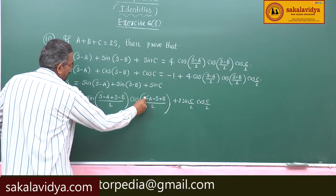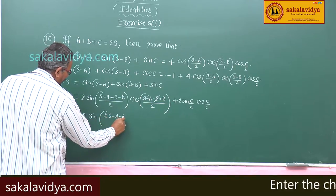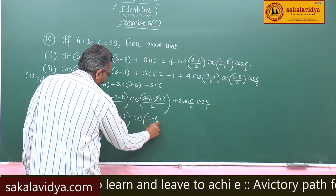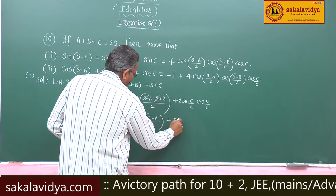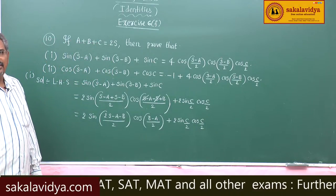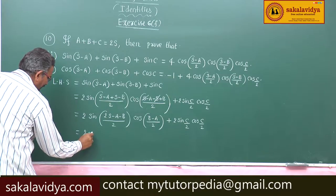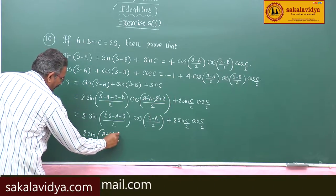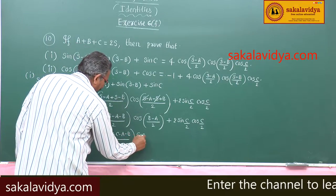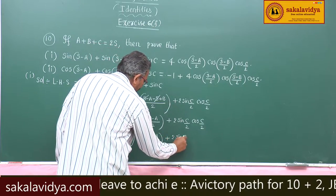Now, s gets cancelled. This can be written as 2 sin((2s minus a minus b)/2) cos((b minus a)/2) plus 2 sin(c/2) cos(c/2). Now, 2s is replaced by a plus b plus c, so we get 2 sin((a plus b plus c minus a minus b)/2) cos((b minus a)/2) plus 2 sin(c/2) cos(c/2). Then a and b terms cancel.